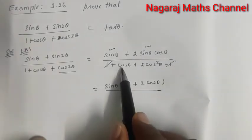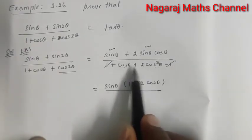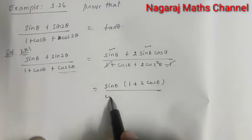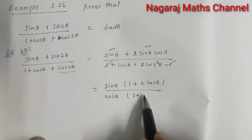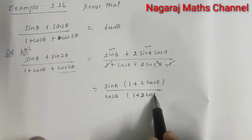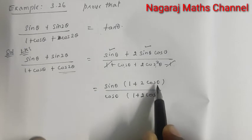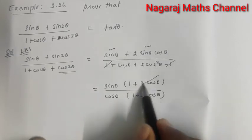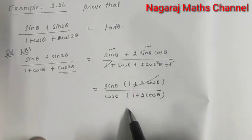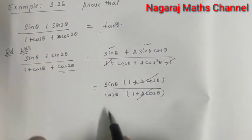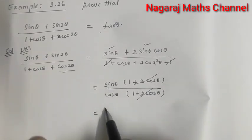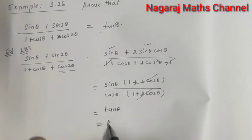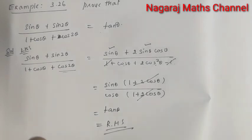In the denominator, cos θ is common. Taking cos θ out gives cos θ times (1 + 2 cos θ). The common factor (1 + 2 cos θ) cancels, leaving sin θ divided by cos θ, which equals tan θ — equal to RHS. Thank you.